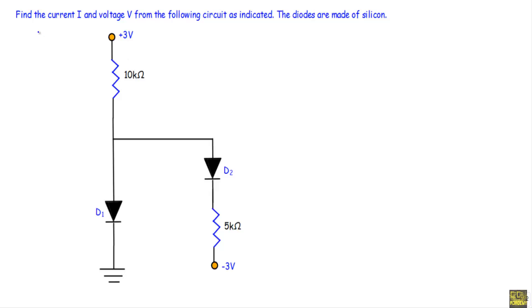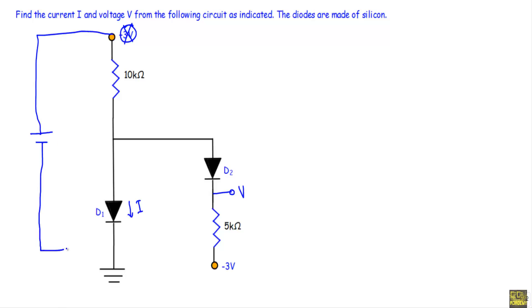This is the second example. We have to find the current I flowing through diode D1 and the voltage V from this terminal to ground terminal. The diodes are silicon. We have two diodes D1 and D2. I will draw the simplified circuit: a 3 volt source with positive terminal connected here and negative terminal here, and a minus 3 volt source meaning another 3 volt source with its positive terminal connected accordingly.